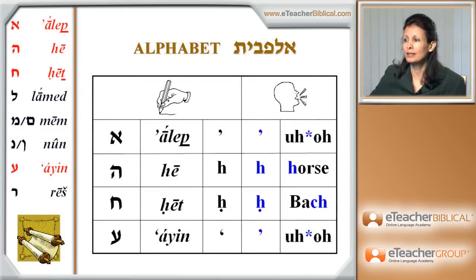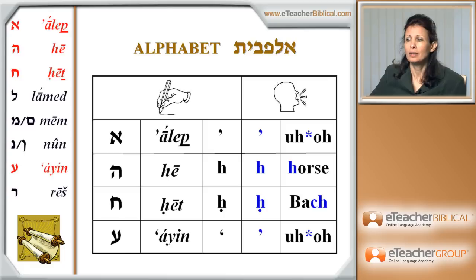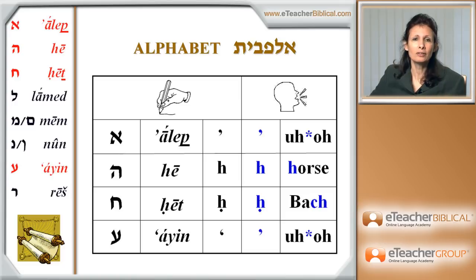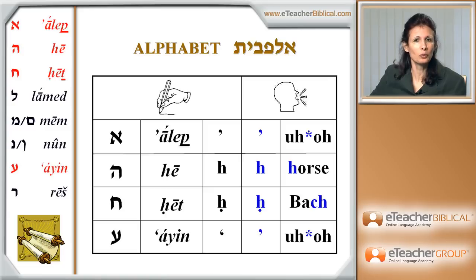The very first letters that we're going to see are a group which are called the guttural families. What is so special about those four letters? Most of them, or all of them, are actually pronounced in the guttural — especially traditionally. But modern Israelis are trying to make it easy for themselves, so you can go ahead and feel free to do it the same.